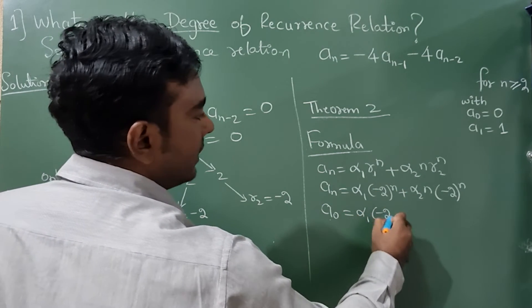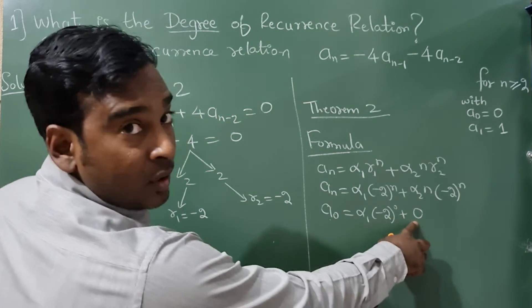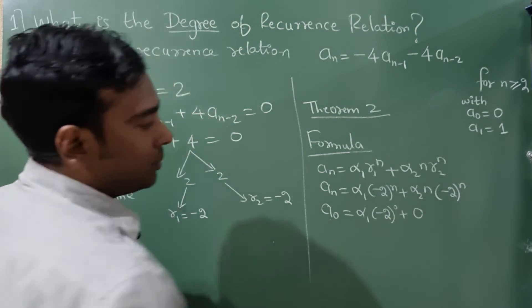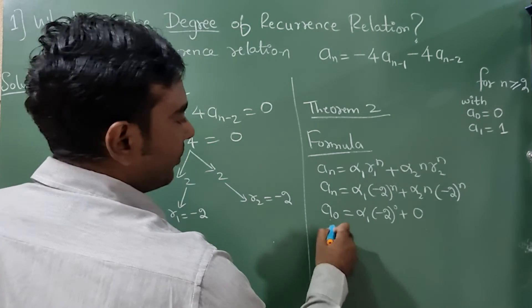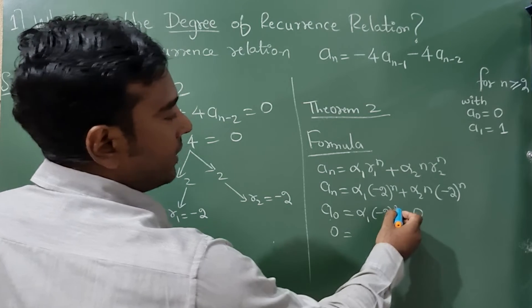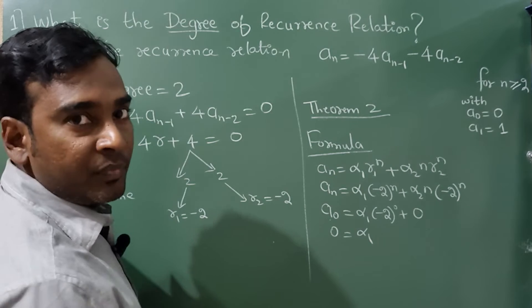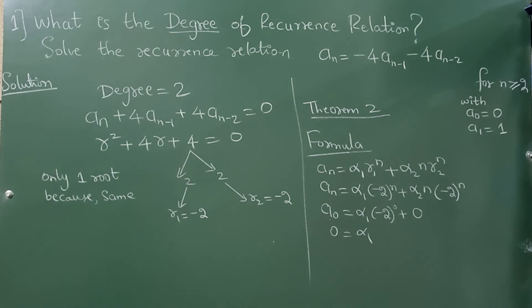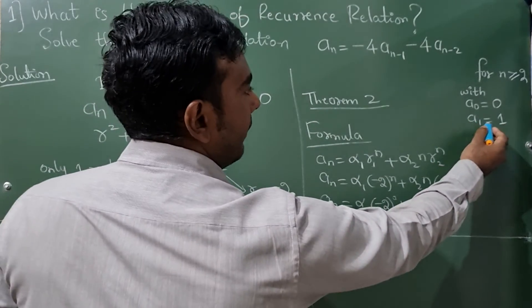What is a₀ value? It is 0. Now anything raised to 0 is 1, so α value has become 0. Now next, a₁ is equal to, a₁ means n value here is 1, so I will write α₁